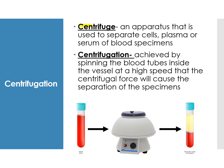A centrifuge is an apparatus used to separate the cells, plasma, or serum of a blood specimen. It works by spinning blood tubes at high speed so that centrifugal force causes separation. When collected, blood is whole blood — entirely red. After centrifugation, it separates into serum or plasma on top, a buffy coat in the middle containing platelets and WBCs, and red blood cells at the bottom. Serum is obtained when no additive was used in the tube.